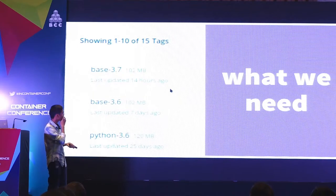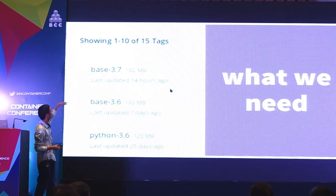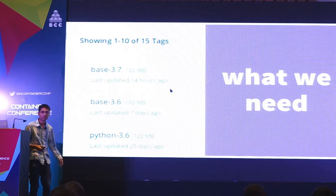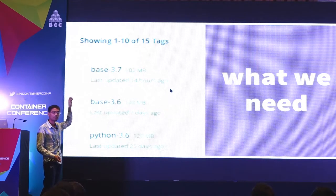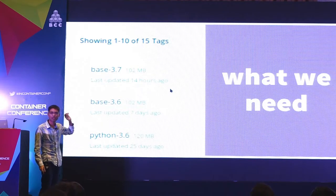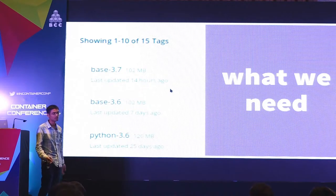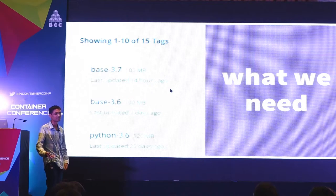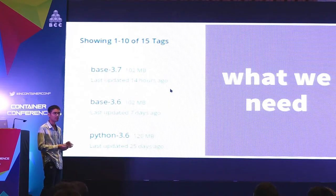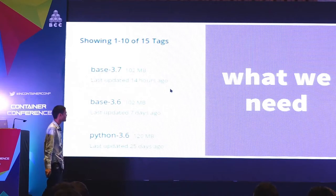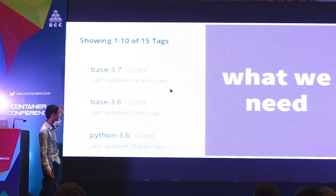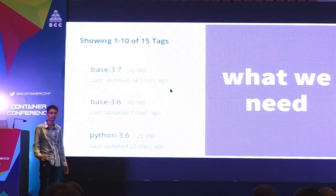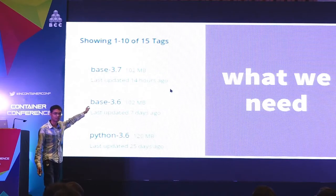This is what we need at the end of the day. We want three different base images. We use Alpine as a base image — base-3.7 inherits from Alpine 3.7, base-3.6 inherits from Alpine 3.6. Why two? Some things may only run in Alpine 3.6, some only in 3.7. We pick Python 3.6 as something built on top of base-3.7 — I think Alpine 3.6 has Python 3.5, so if an application wants Python 3.6, it has to use base-3.7.